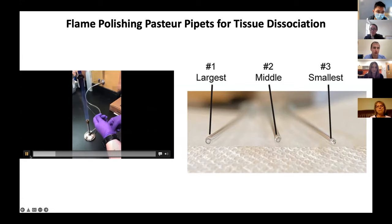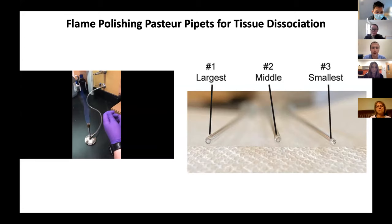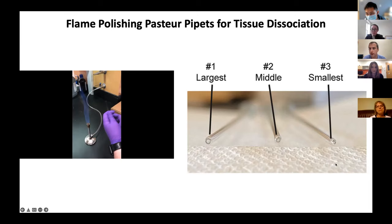Most of you are probably familiar with flame-polishing pipettes, as seen in this video. Essentially, we use shear force by using smaller and smaller openings in these flame-polished pipettes to dissociate tissue to the single cell level. The nature of hand-flaming means we don't have exact measurements for opening sizes, but generally they are about three quarters, half, and one quarter of a micron in size.